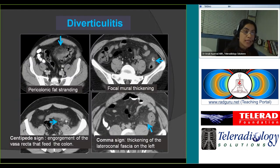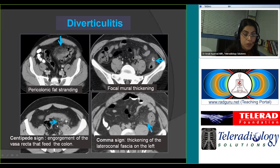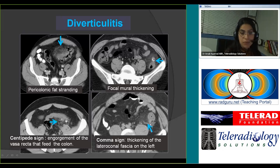The most important CT finding in diverticulitis is pericolonic fat stranding. You may also see mural thickening or eccentric mural thickening adjacent to an inflamed diverticulum. A sign described as the 'comb sign' results from engorgement of the vasa recta feeding the colon. The 'comma sign' is basically thickening of the lateral conal fascia, seen on the left side as a result of inflammation surrounding the inflamed sigmoid colon diverticulum.